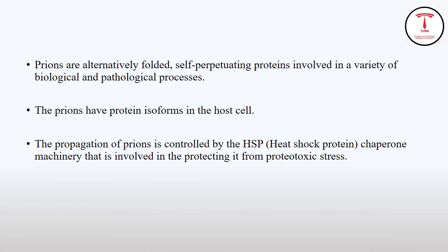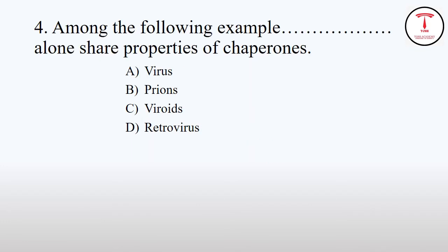Prions are a type of protein that cause disease in animals and humans. Prions have simple protein structures. Prions exist as isoforms, that is, protein with similar structure to host cell proteins. The answer is Prions.